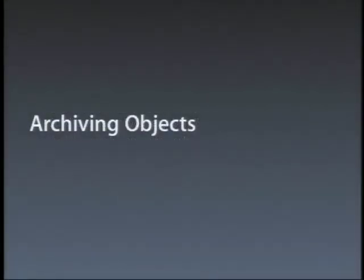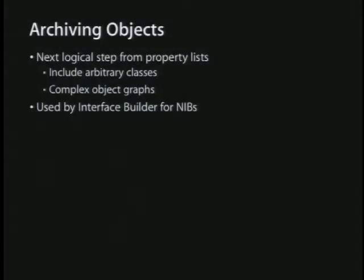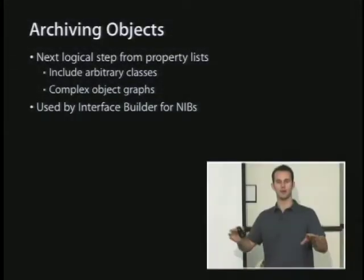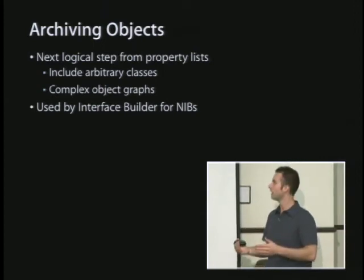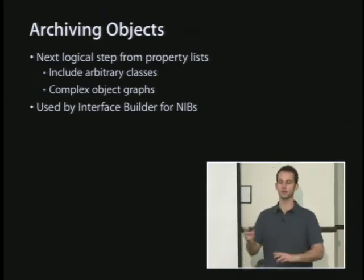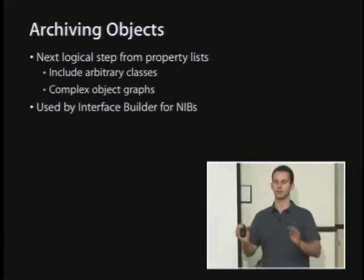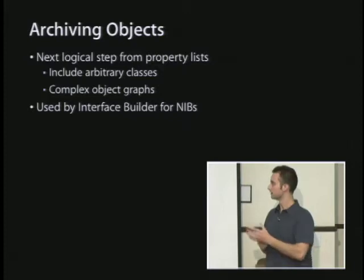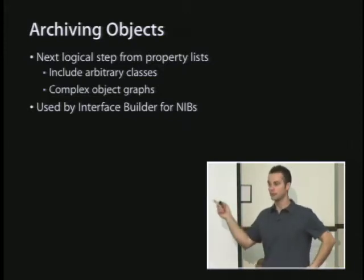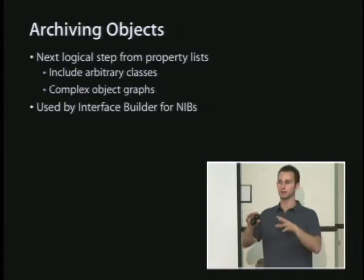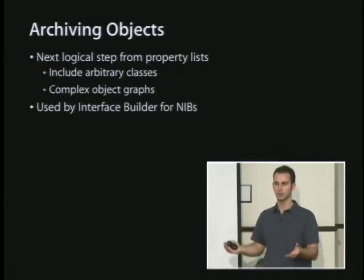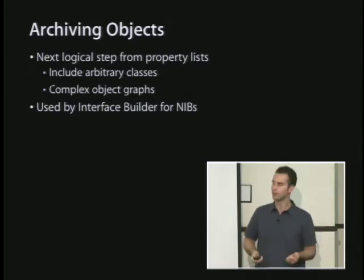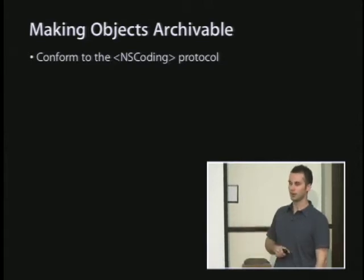In addition to property lists, there's a more heavyweight solution called object archiving. This is one step up from property lists — you can add custom objects that you write, or system objects from UIKit, and you can do complex object graphs like cycles and loops. This is how nibs work: any time you create a nib in Interface Builder, it uses these methods to write out a serialized object graph of your views and view controllers.